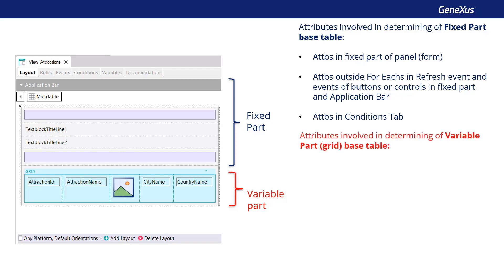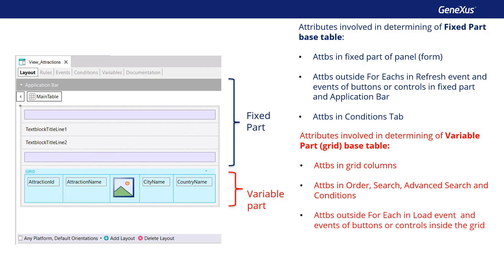To determine the base table of the variable part — in this case, the grid — the attributes taken into account will be those included in the grid columns, both visible and hidden. The attributes referenced in the order, search, advanced search, and conditions of the grid, and the attributes belonging to the load event code, as long as they're outside for each clauses, and included in the events of buttons or controls within the grid. The attributes in the conditions tab will also be taken into account for determining the base table of all the grids included in the panel. Also, the grid will have a base table if its base trn property was assigned with a base transaction.